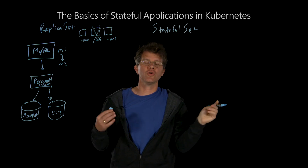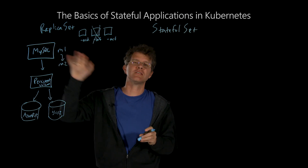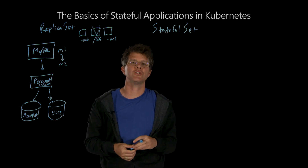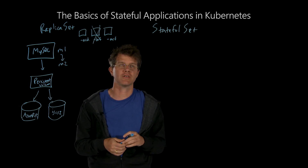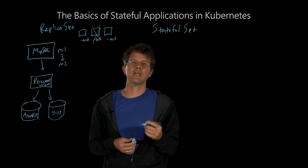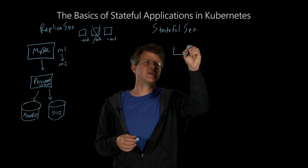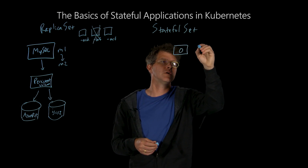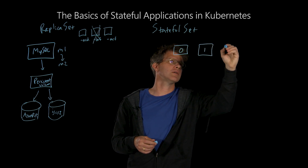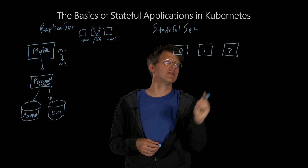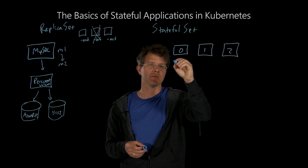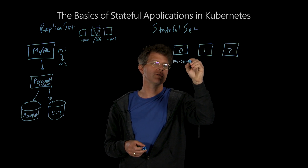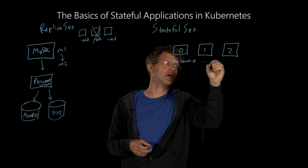Stateful set in Kubernetes is similar to a replica set, but it adds some guarantees that make it easier to manage stateful applications inside of Kubernetes. In particular, with a stateful set, the replicas have indices — so you know that this is replica 0, replica 1, replica 2. They have stable host names, something like my-server-0 and so on.